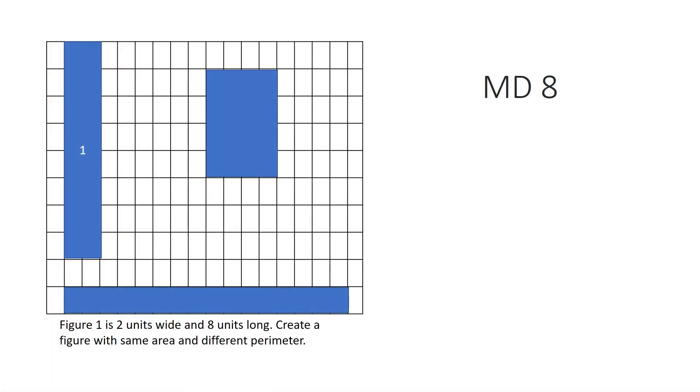Okay, so here we have rectangle one and it is two units wide and eight units long. We want to create another rectangle that is the same area but a different perimeter. So let's look at the steps of how we're going to do that.